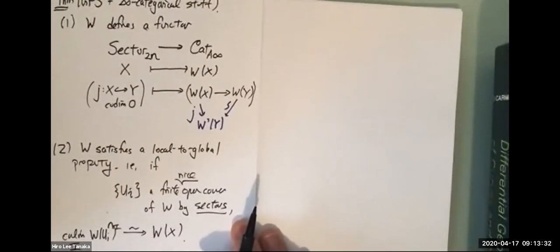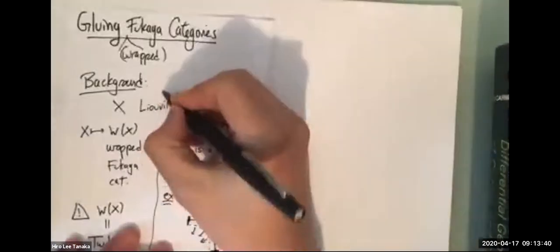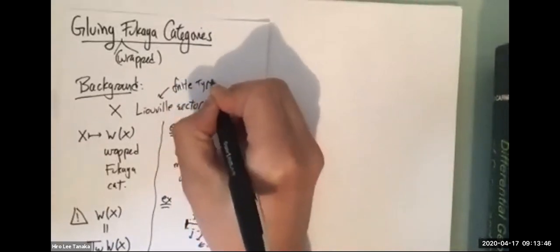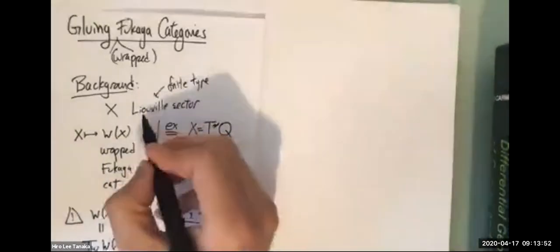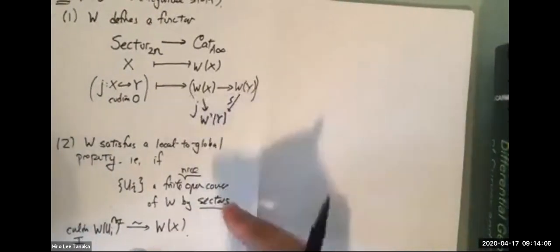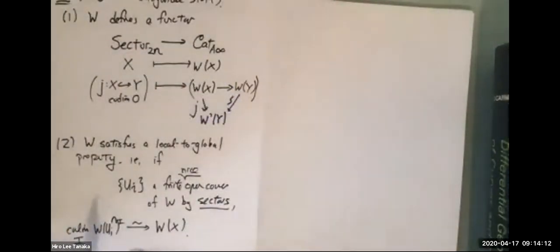Mohammed asks: does this theorem require a Weinstein assumption? Yes, it does. Not only finite type, but yes, you do need a Weinstein assumption because you need actual Lagrangians that you can produce to be able to write down generators. You need co-cores. So I should be saying Weinstein sector, not Liouville sector. Thank you for pointing that out. So unless GPS has an update, this does require a Weinstein assumption.